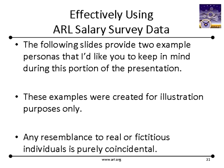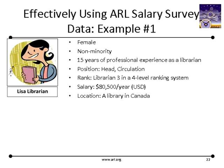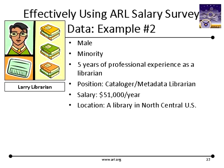First, I'd like to introduce you to Lisa Librarian. She is a female, non-minority, prototypical librarian with 15 years of professional experience. She's the head of circulation in her library, her rank is Librarian 3, and her fictitious library has a four-level ranking system. Her salary is $80,500 a year in U.S. dollars, and she works in a library in Canada. Our second prototype is Larry Librarian. He is a male, minority librarian with five years of professional experience. His fictitious job is as a cataloger and metadata librarian with a salary of $51,000 a year, and Larry works at a library in the North-Central U.S. We'll revisit Lisa and Larry at the end of the presentation.